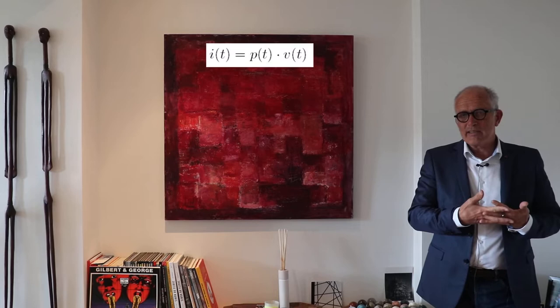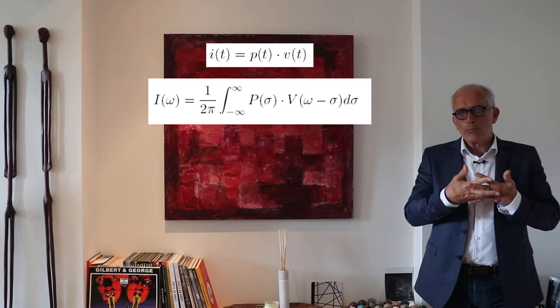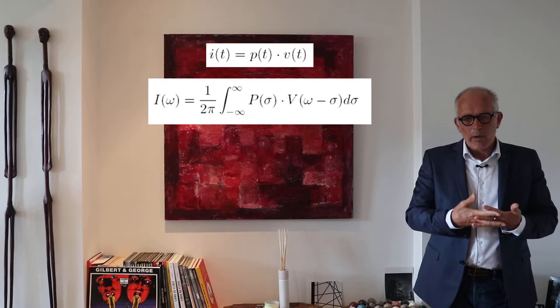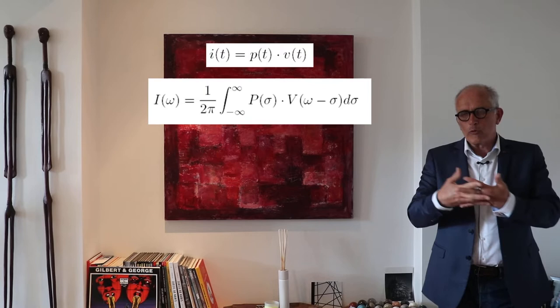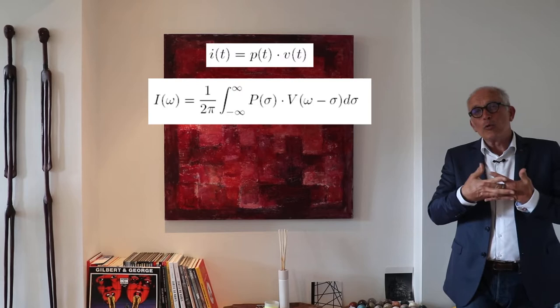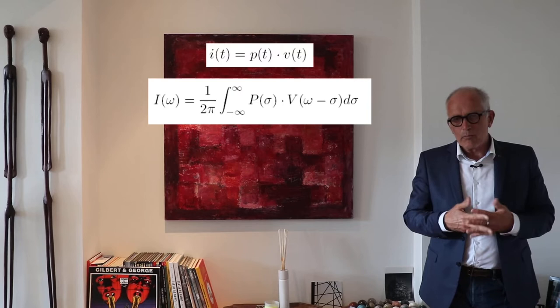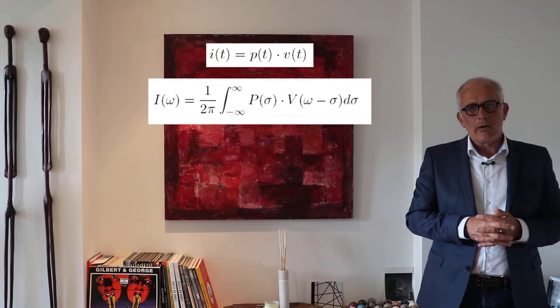I see that it is the convolution product of the pressure spectrum and the velocity spectrum. You remember that if a signal in the time domain is the product of two signals, in the frequency domain the simple product becomes a convolution product. So we have a spectrum I(ω) which is the convolution product of P(ω) times V(ω).